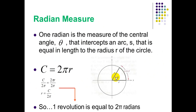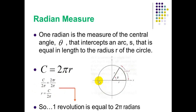Radian measure: one radian is the measure of the central angle theta that intercepts an arc S equal in length to the radius r of the circle. The circumference of any circle equals 2π r. Dividing both sides by r, one revolution equals 2π. So 2π is equivalent to 360°: 2π in radians equals 360°, π in radians equals 180°, and π over 2 in radians equals 90°.